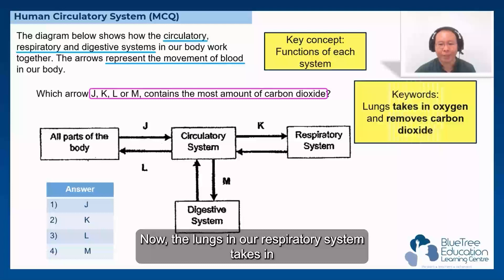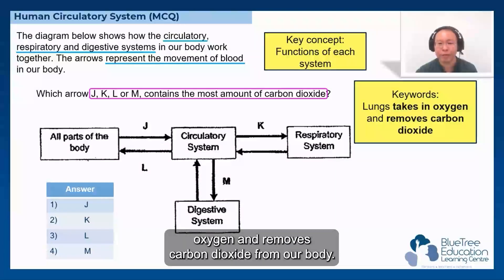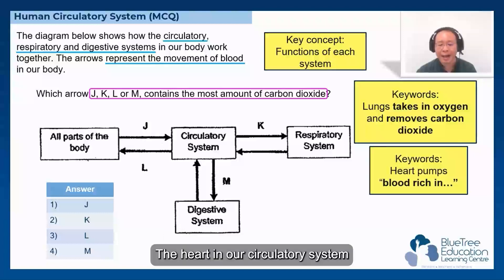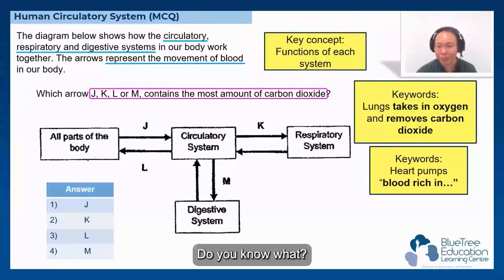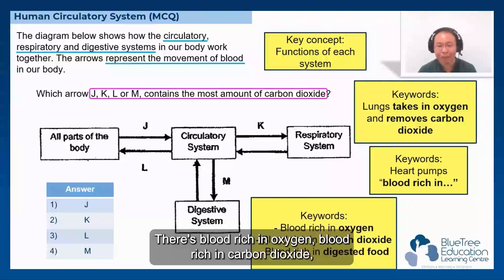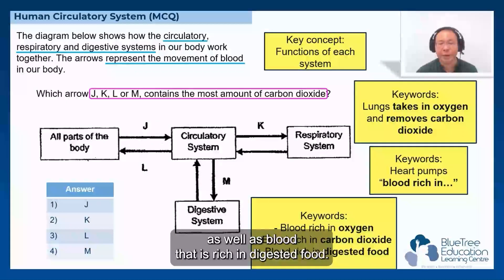The lungs in our respiratory system take in oxygen and remove carbon dioxide from our body. The heart in our circulatory system pumps blood that is rich in oxygen, blood rich in carbon dioxide, as well as blood that is rich in digested food.